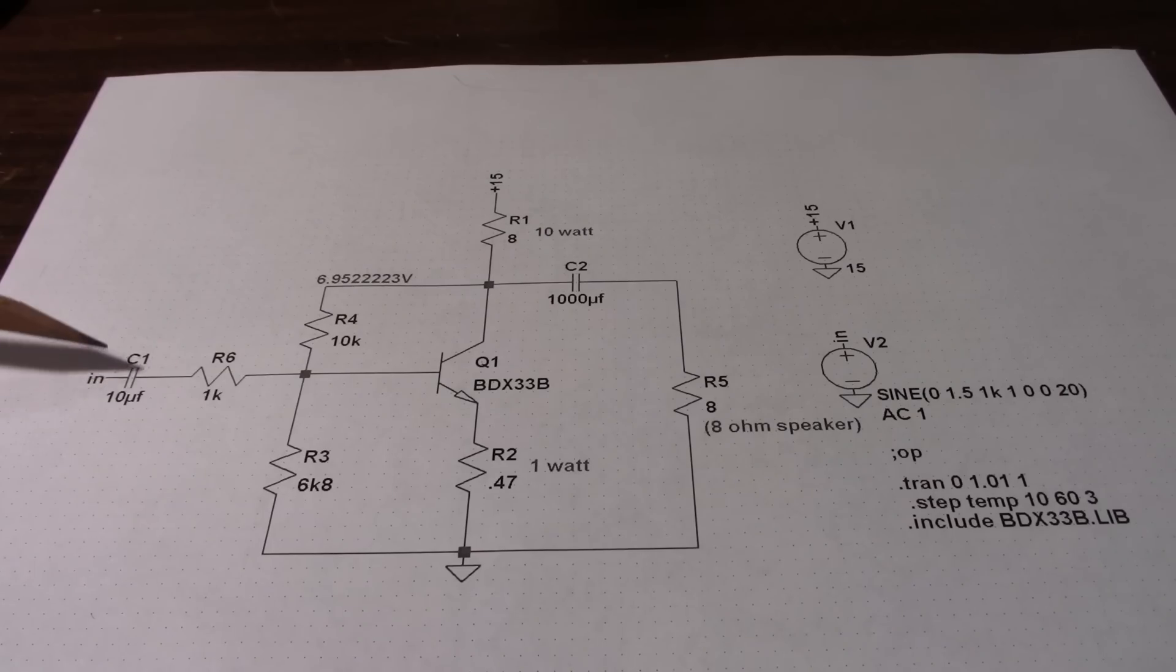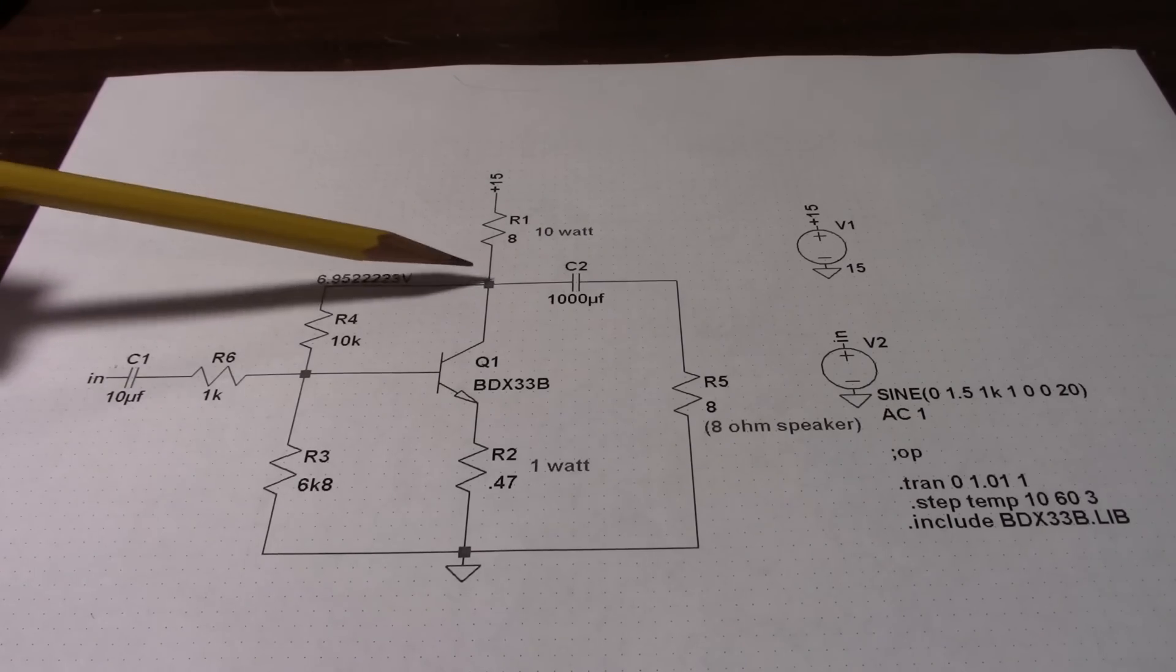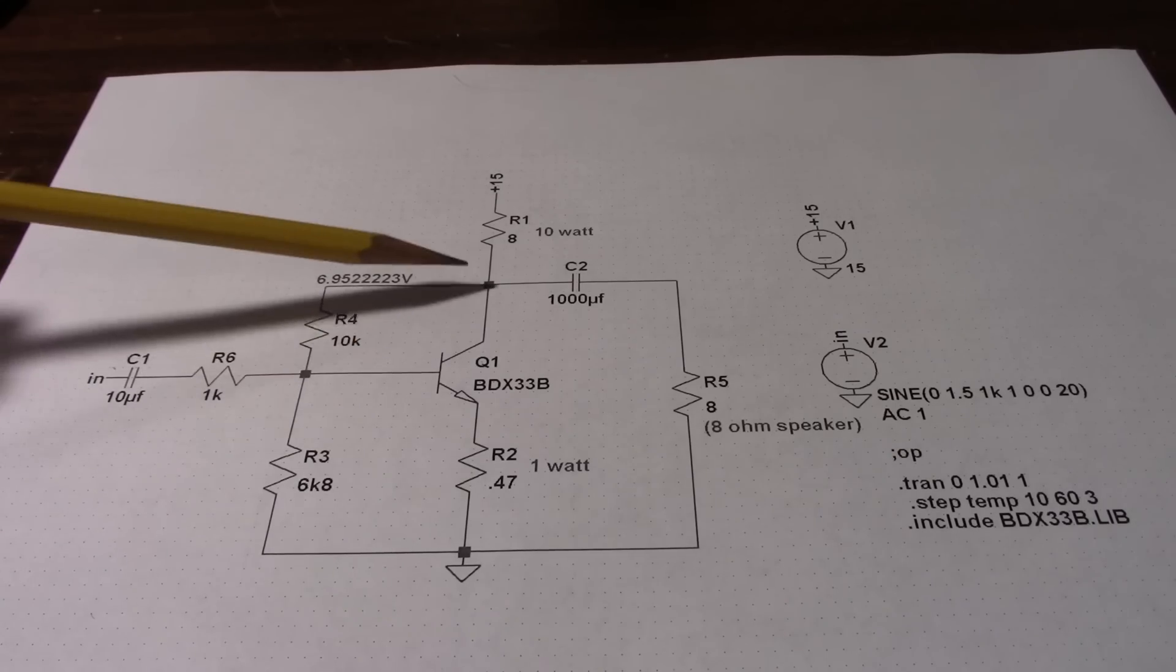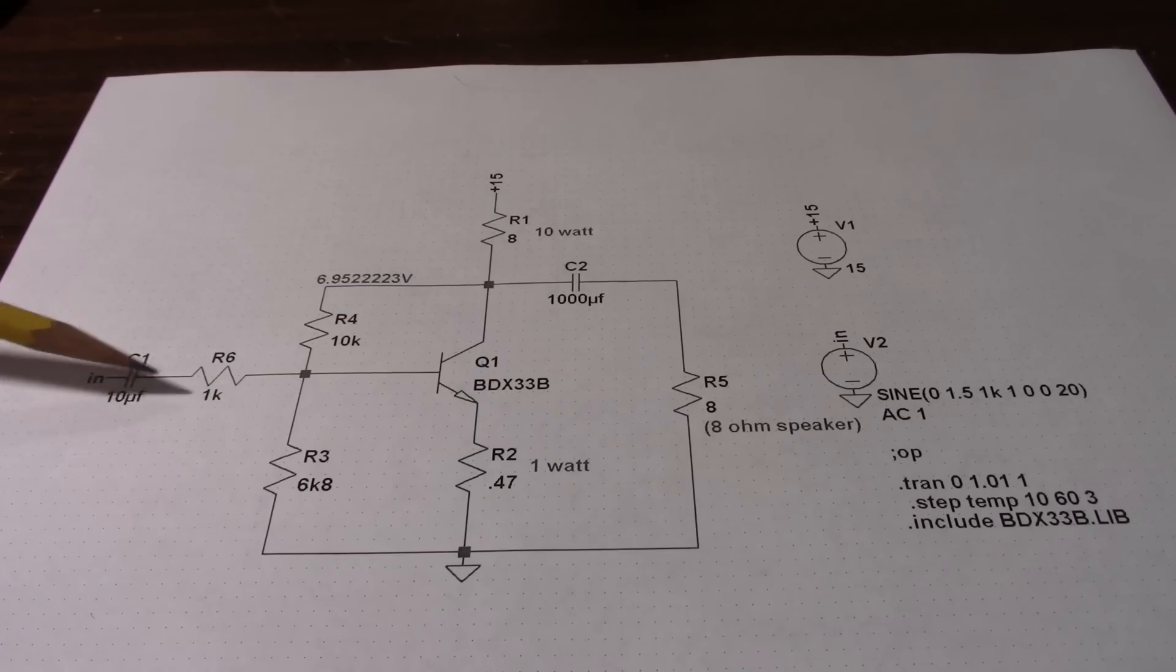On the input circuit here we have a capacitor. The reason for that is if we connect a signal source here and it conducts some of our DC current, it will throw off the bias points of this circuit. So we want to prevent any DC from flowing into or out of the input circuit. And this resistor here on the input acts as a voltage divider network for the feedback. If I didn't have this resistor here, the low impedance of the signal source could shunt away the AC feedback signal.